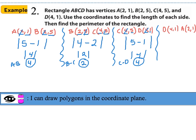For point D (4,1) to point A (2,1): the y-values are both 1, so we ignore those and find the absolute value difference of the x-coordinates: |4 − 2| = 2. The distance from D to A is 2.